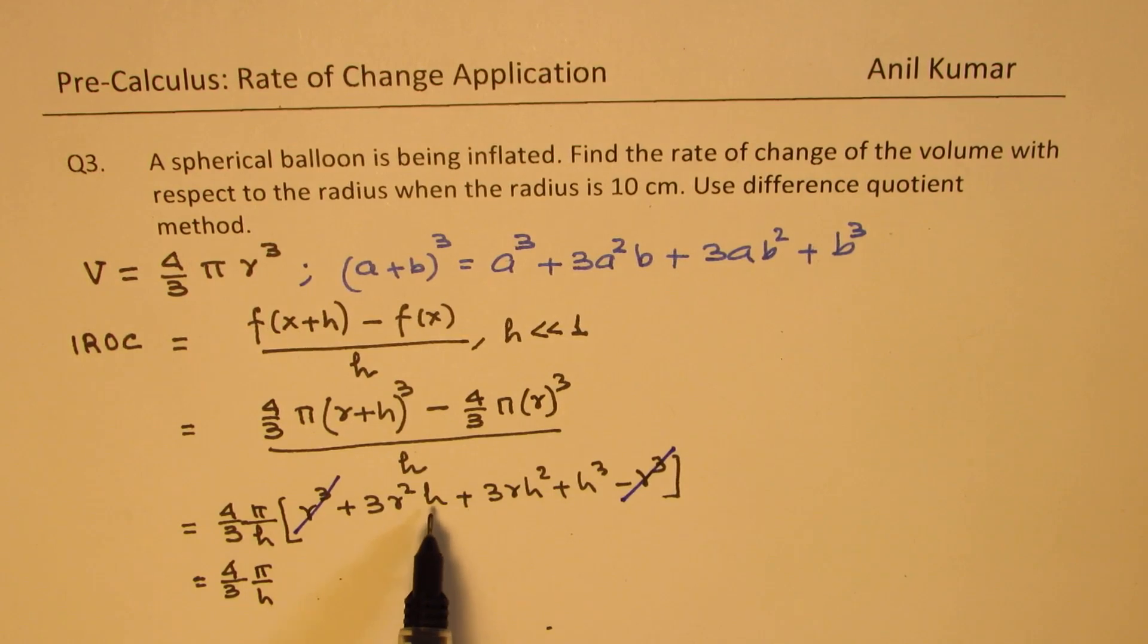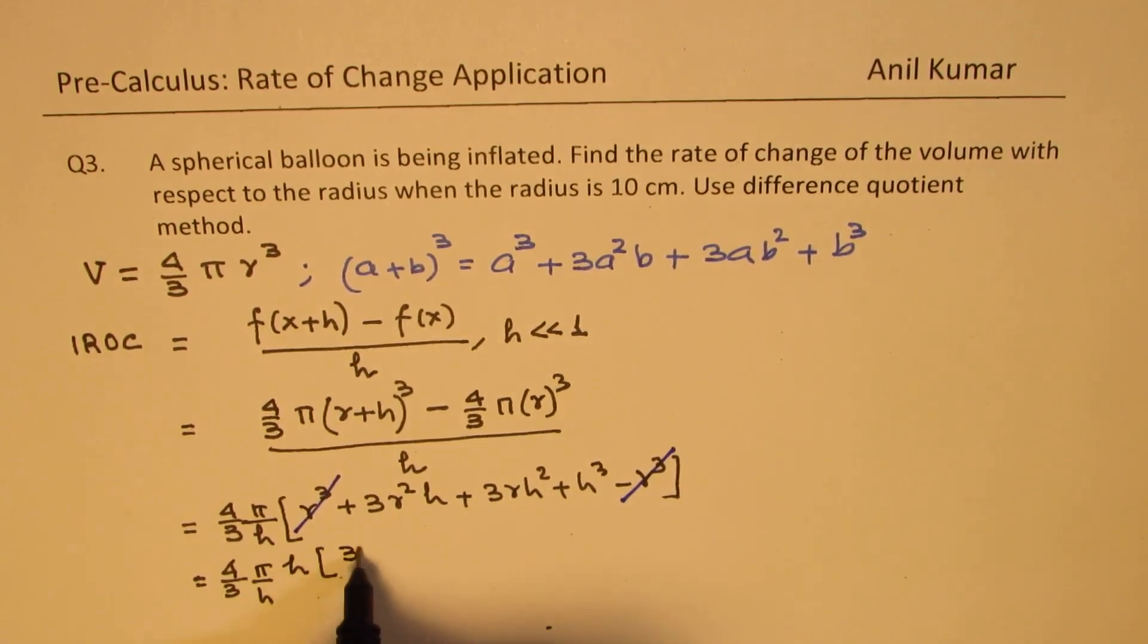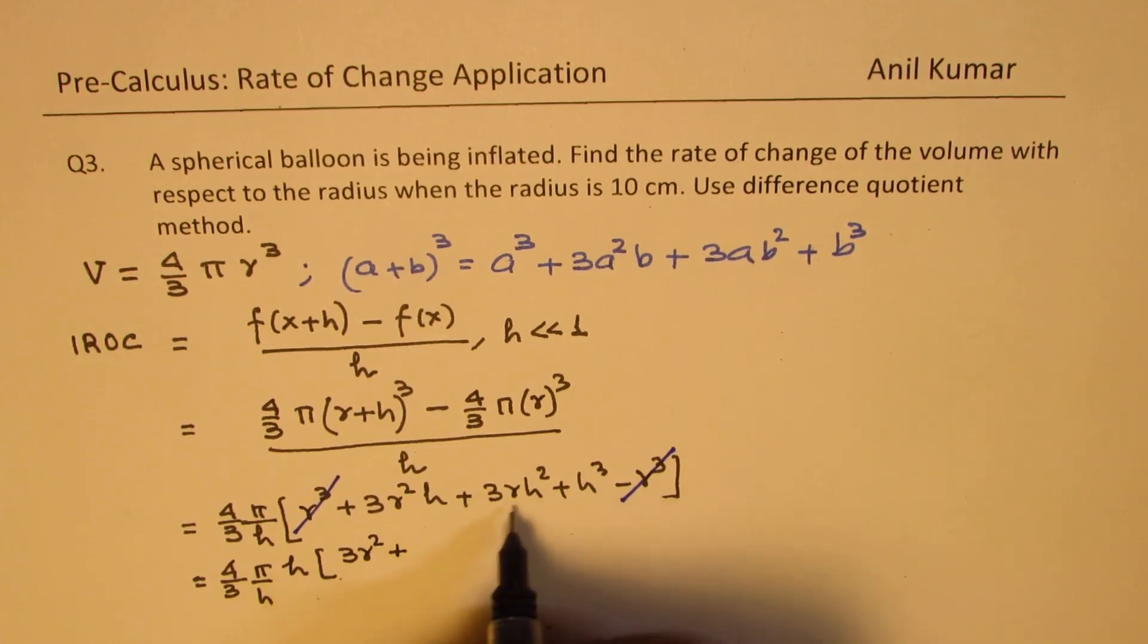So we're left with 3 r square h plus 3 r h square plus h square.